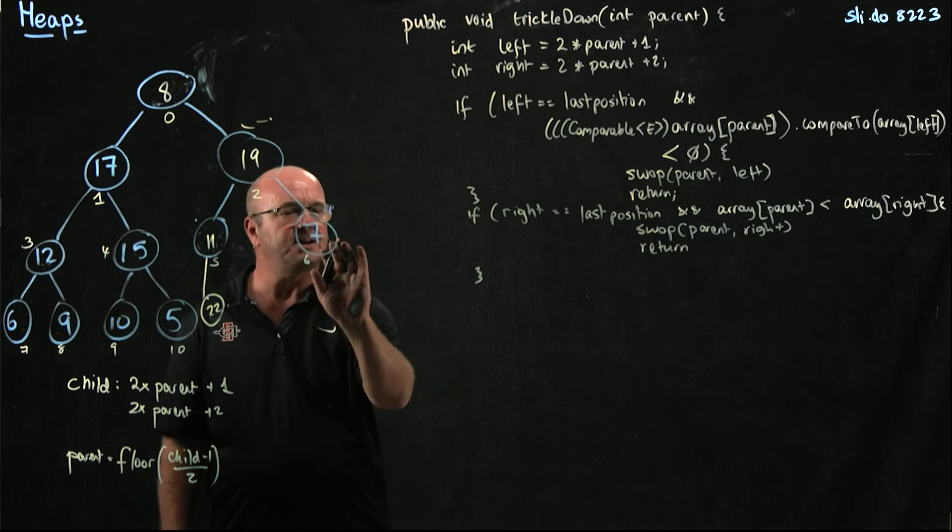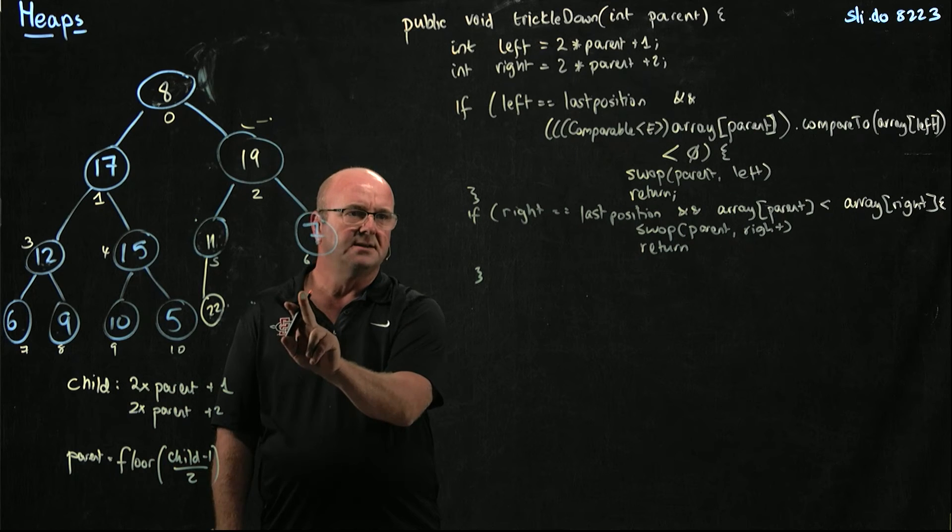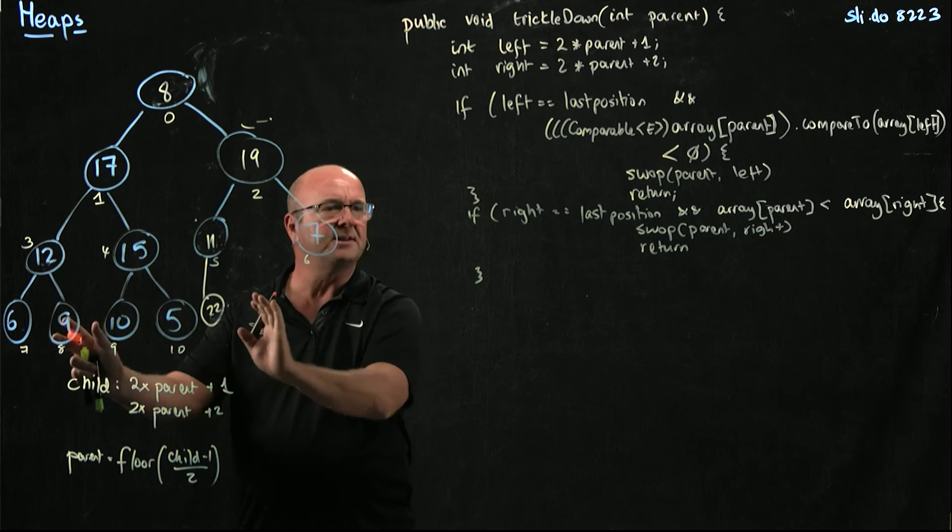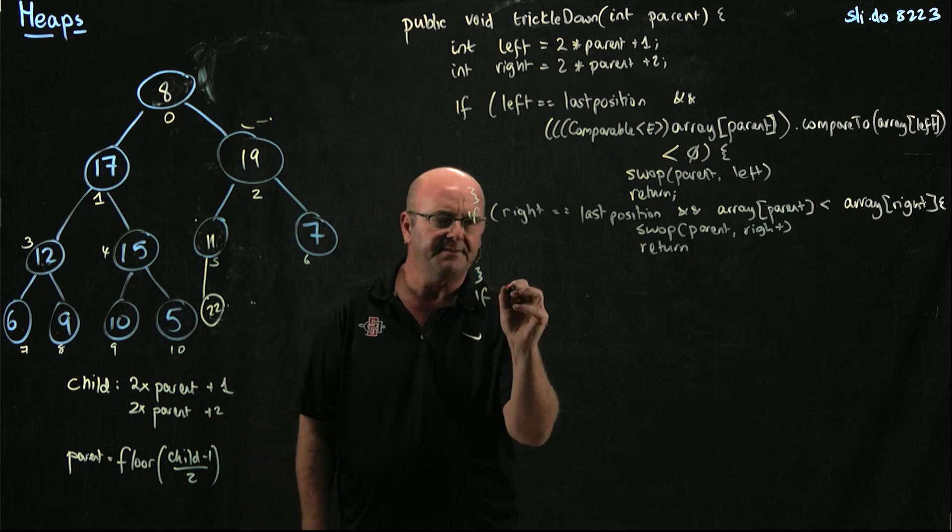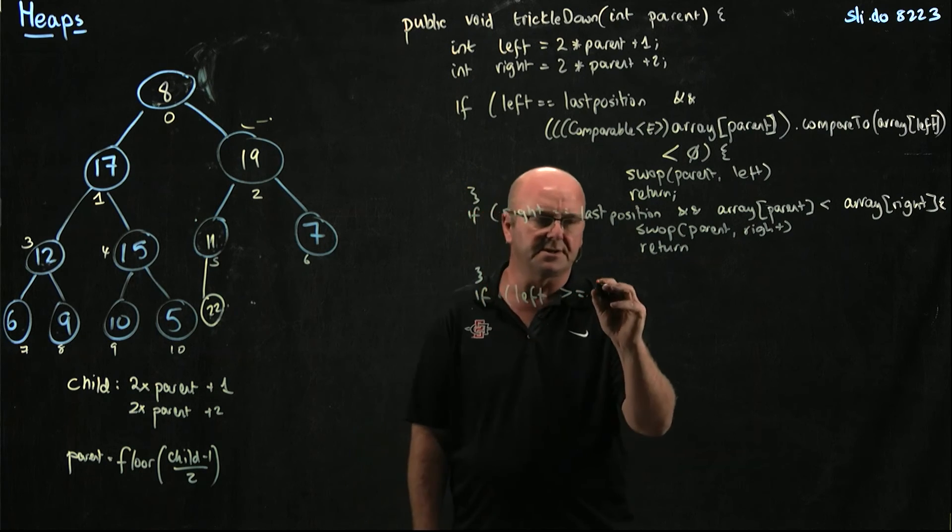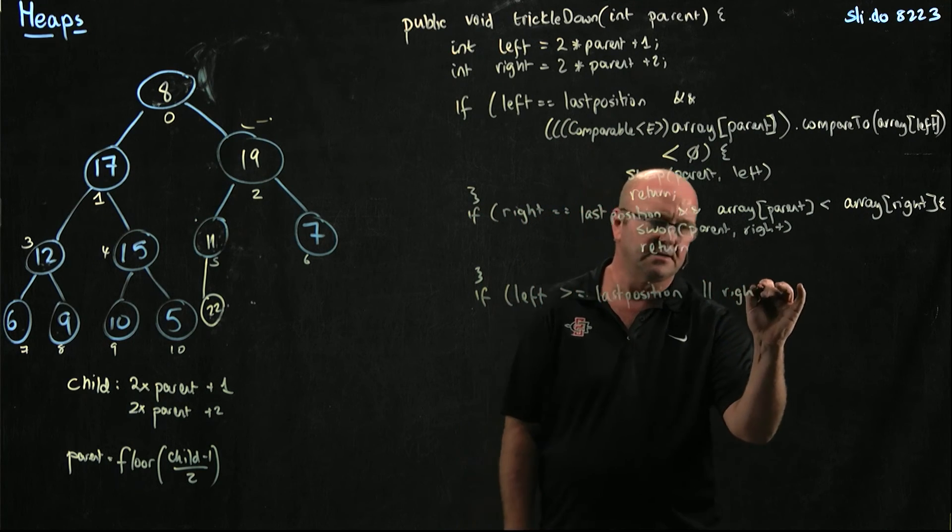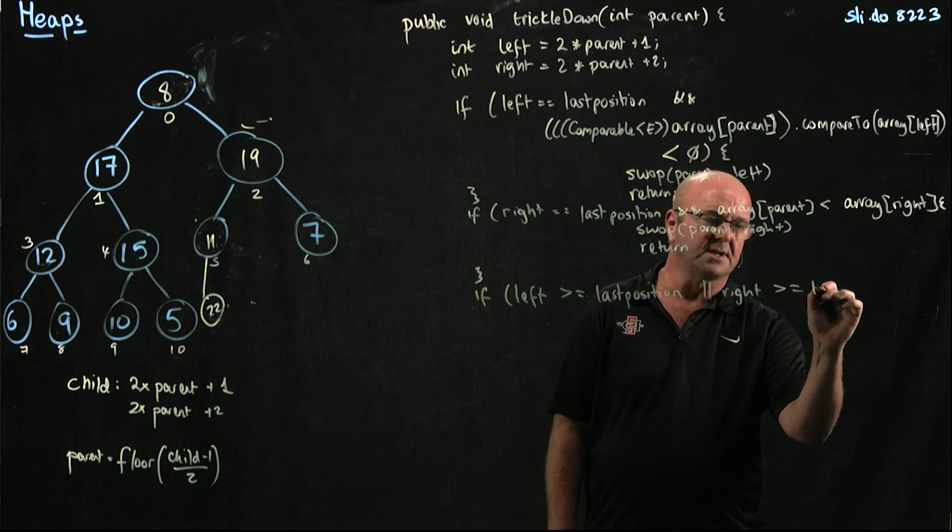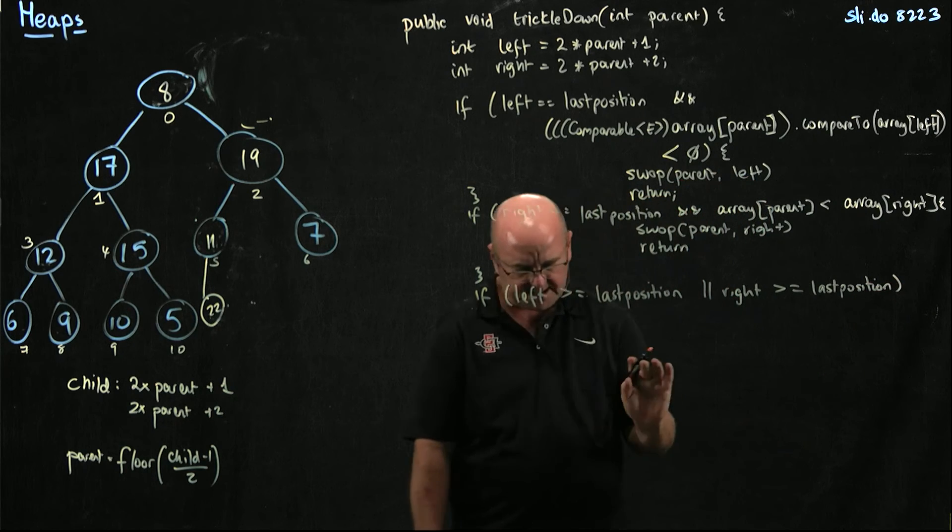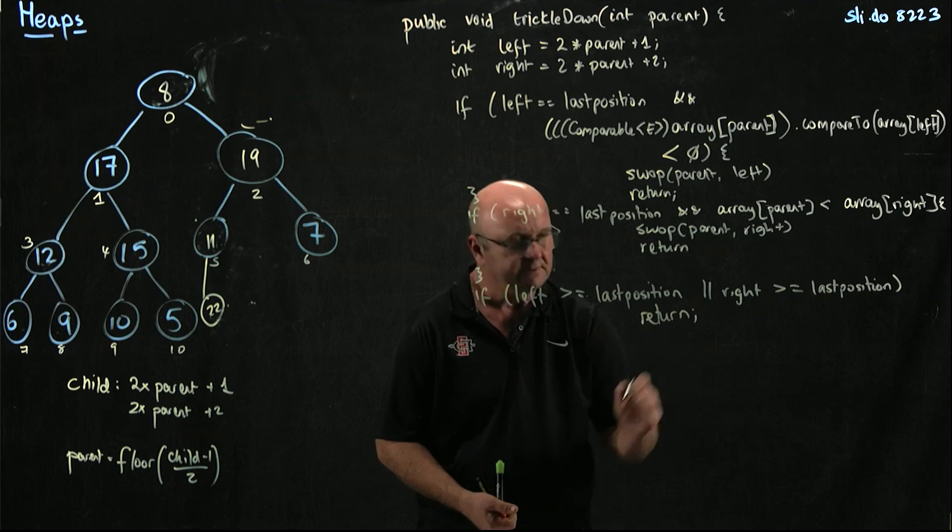And then we also need to check, for example, if we're here at number 6, where 2 times 6 plus 1 is 13, 2 times 6 plus 2 is 14. That's way beyond the end of our position. So if left is greater than or equal to last position, or right is greater than or equal to last position, then we're already done. We don't need to do anything. We're at the end where we can get out of there.